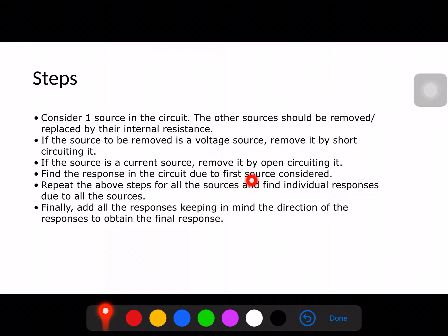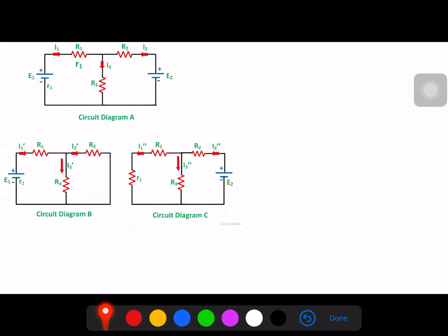Find the response in the circuit due to the first source considered, obviously. And finally, we will repeat these steps for all the sources and find the individual responses due to all the sources. Then we will come to the final step. We will add all the responses, keeping in mind the direction of the responses to obtain the final response. So these are the steps. I will go through these steps in the next example so you can understand it better.